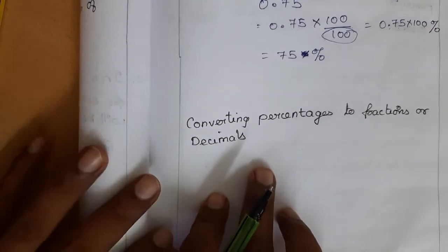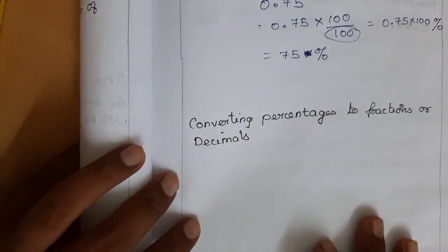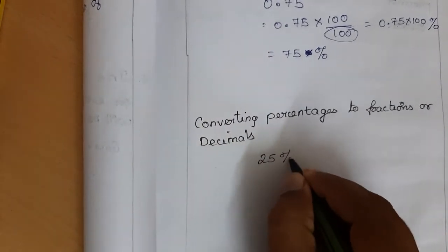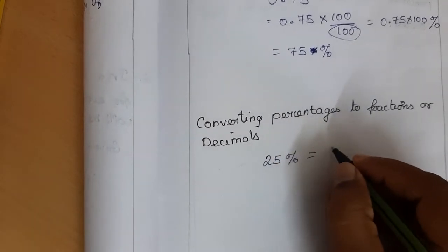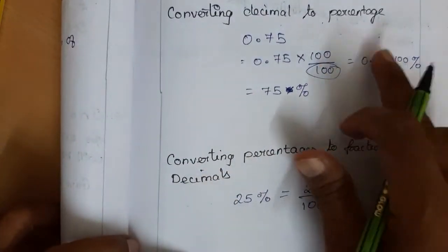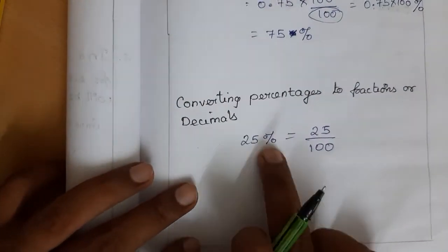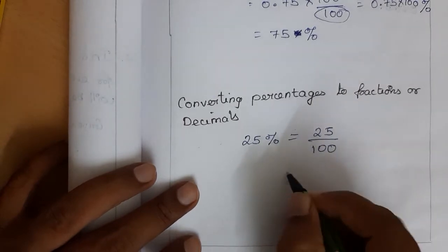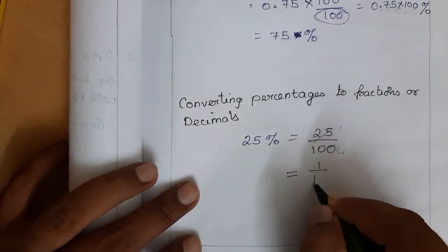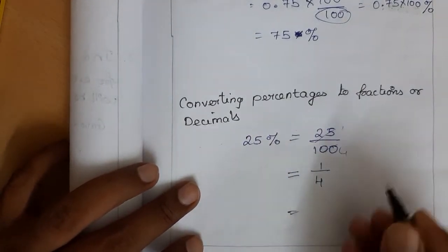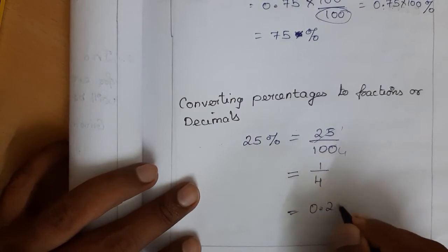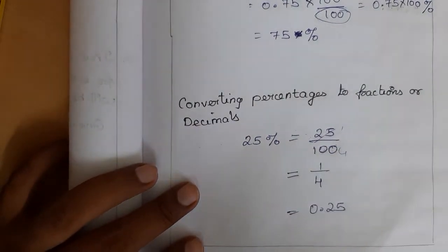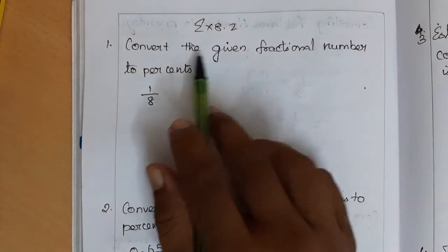Next, converting percentage to fraction or decimal. Consider 25 percent is given. Percentage means out of 100, so we write 25 divided by 100. This is the fraction form. Simplified, it becomes 1/4. We can also represent it as the decimal 0.25 — since there are two zeros in 100, we move the decimal two digits.